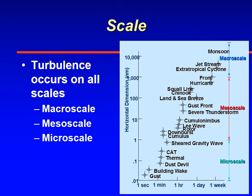Macroscale eddies are the larger ones, such as hurricanes and typhoons. Mesoscale are somewhat smaller — typically those eddies are things like chinooks or mountain waves. Microscale are really small-scale phenomena, such as just a gust moving downwind of a building.